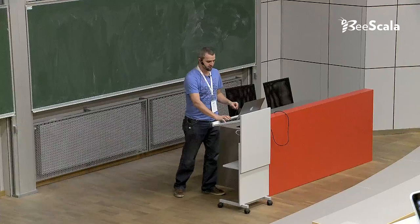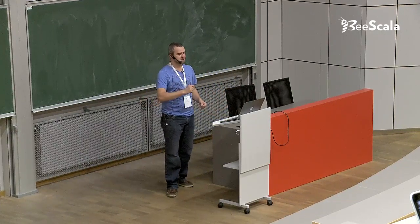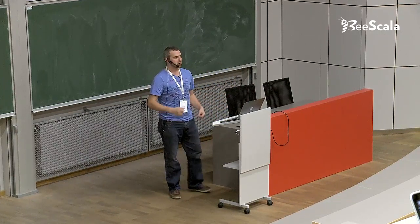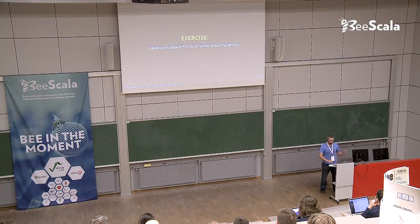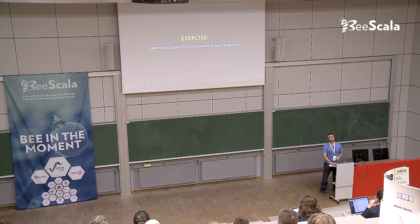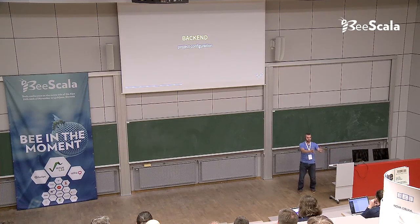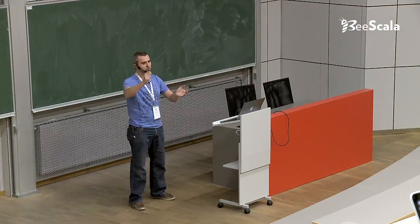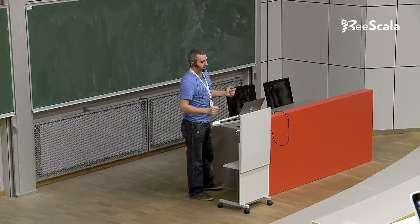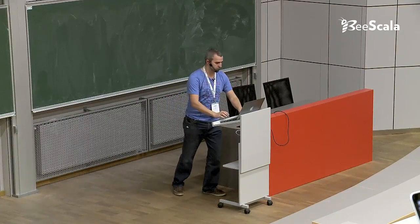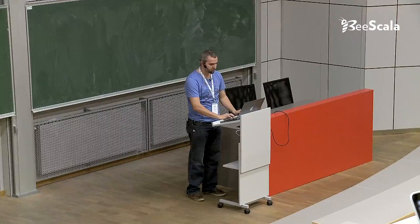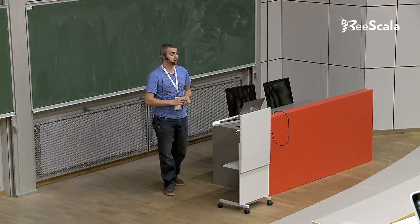I start with an exercise: develop a full-stack proof of concept for a Twitter streaming service. This afternoon I want to develop something different from usual — I want to do it fast, with the actor model and Scala.js on the other side. On one side we have to develop a backend that will take tweets and stream them to the frontend, and to develop it we need a little bit of project configuration to start with a Scala.js project.